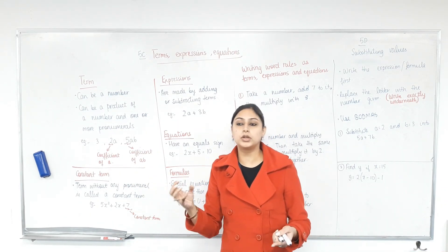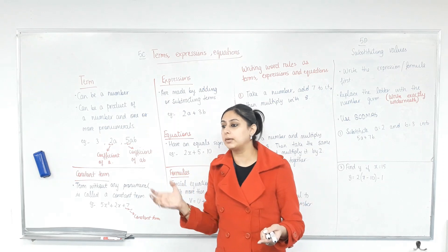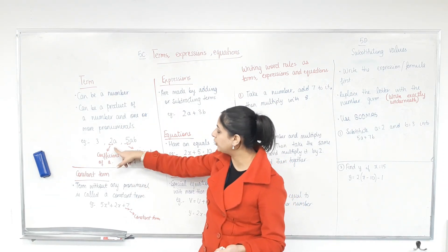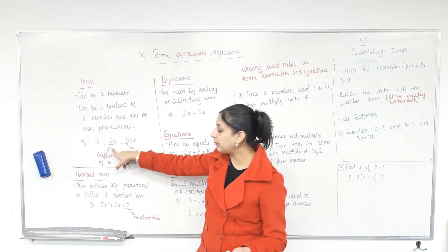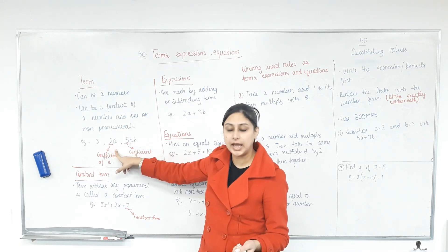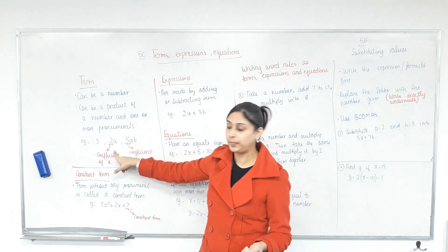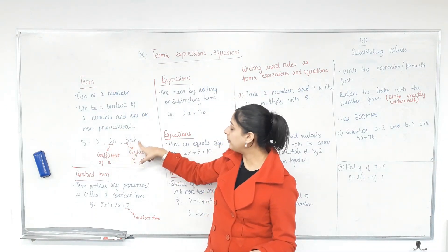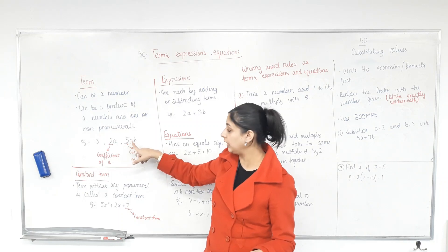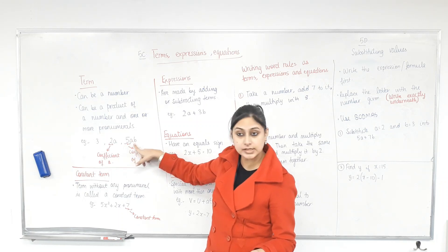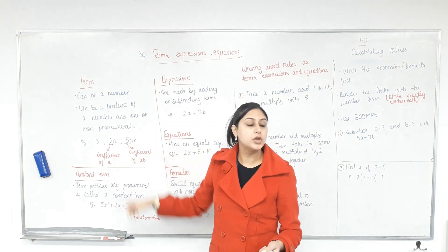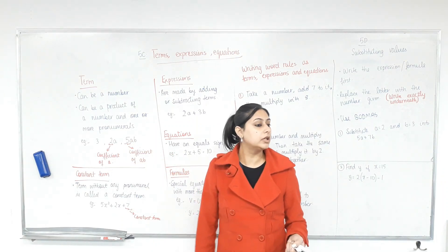Or it could be a product of letters and numbers together. For example, 2A — that means 2 times A, so that's the product of a number and a letter. 5AB is a product of two letters A and B and a number 5. So they are all terms.